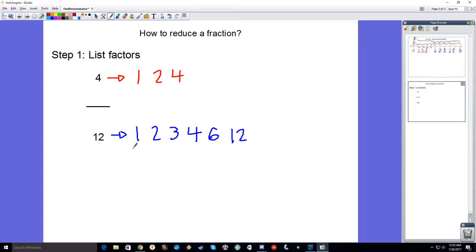Obviously, they always have 1 in common. So let's just circle that. They have 2 in common as well, and they have 4 in common. Now what you need to do is focus on the largest number that they have in common, which in this case is going to be the 4.